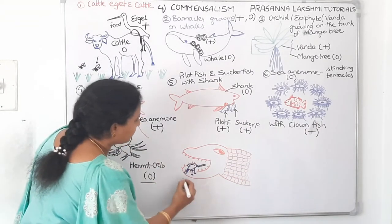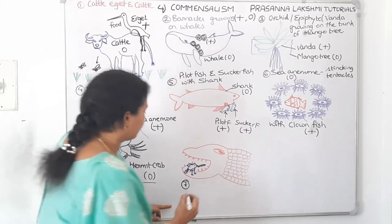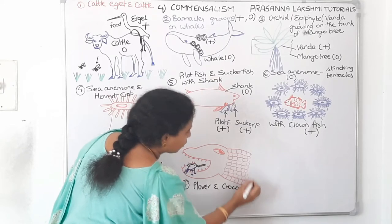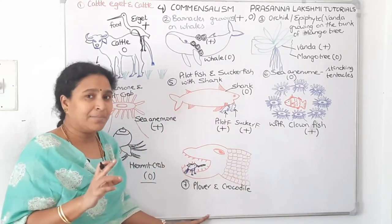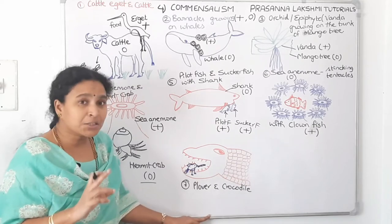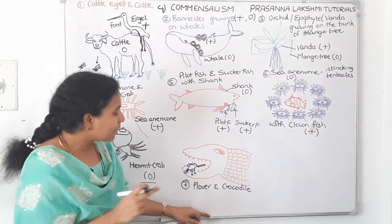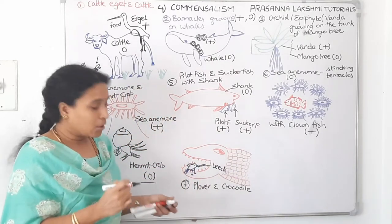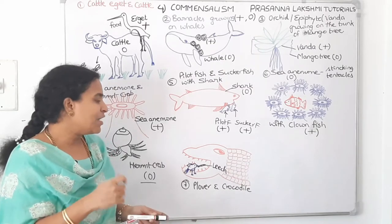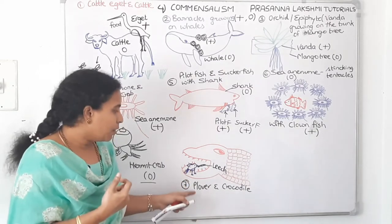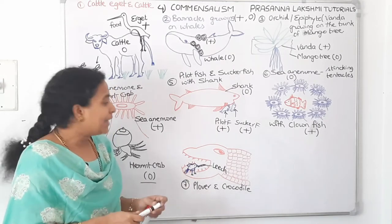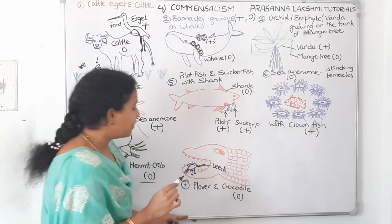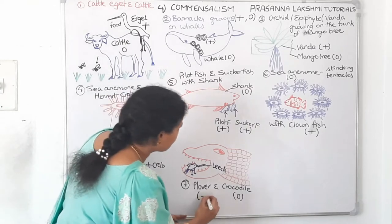The seventh example is crocodile and plover. Crocodile is a carnivorous animal, and after feeding it has blood in its mouth. Leeches go to suck that blood. When the crocodile opens its mouth and rests, the plover bird goes inside and picks up the leeches. The crocodile is not getting any benefit — zero — but the plover is getting the food — plus.